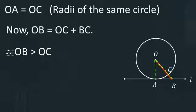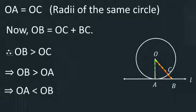So, OB is longer than OC. It implies that OB is also longer than OA. OC and OA are equal. So, it implies that OA is shorter than OB.